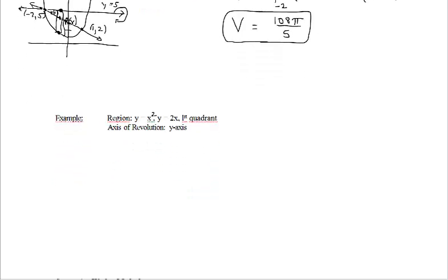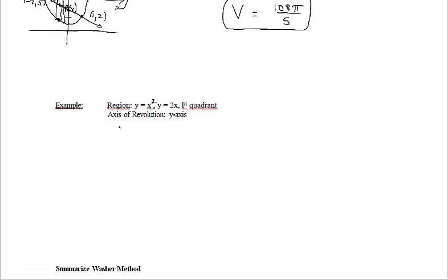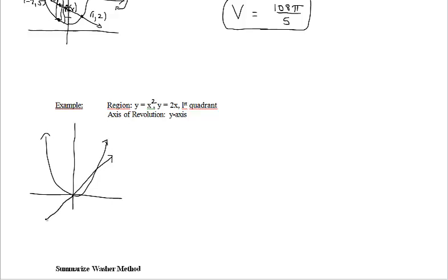Let's take a look at the last example. We've changed the region a bit — y equals x squared and y equals 2x. The two equations naturally form a bounded region. We're looking at the region y equals x squared, y equals 2x in the first quadrant. Notice the axis of revolution is vertical now — it's the y-axis. Our rectangles are perpendicular to the axis of revolution, so in this case we're going to put in a horizontal rectangle.